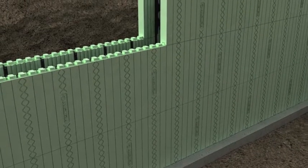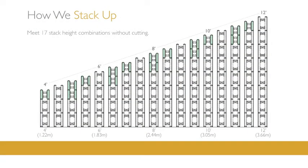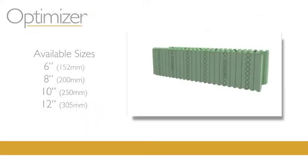The Optimizer works in combination with Nidura's regular height forms to allow installers the ability to meet 17 different stack heights from 4 feet or 1.22 meters to 12 feet or 3.66 meters without having to rip forms.